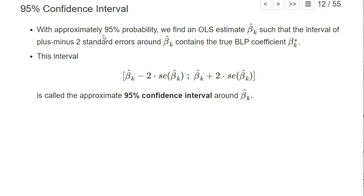What it essentially means is that with approximately 95% probability, we find an OLS estimator such that the interval plus minus two standard errors around this estimator contains the true coefficient of the best linear predictor beta star k, against which this OLS estimator converges if you have a large sample size.